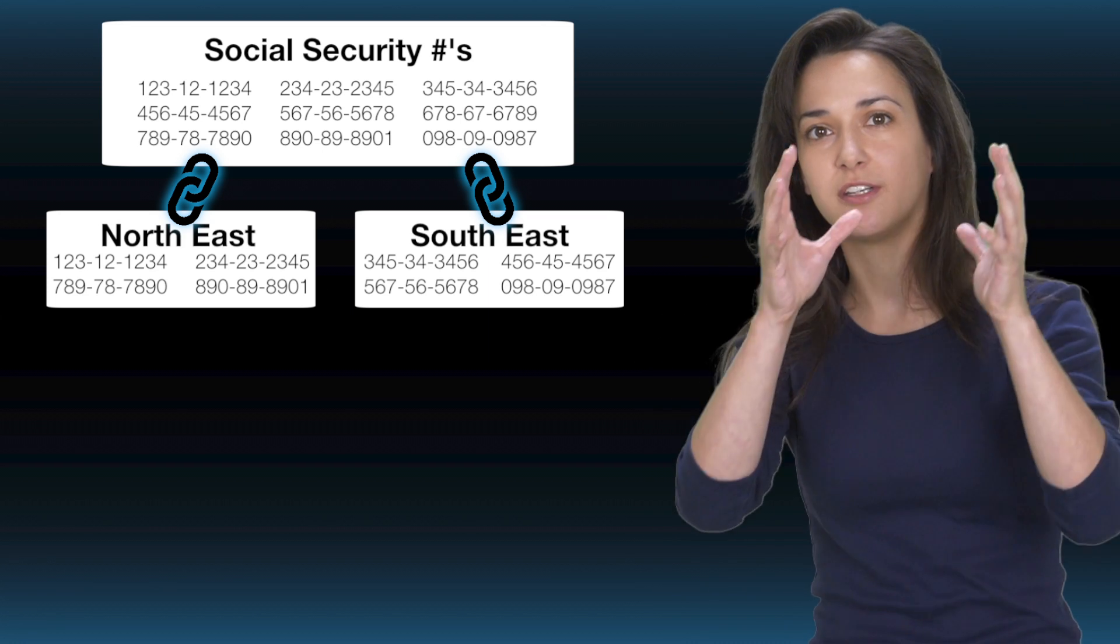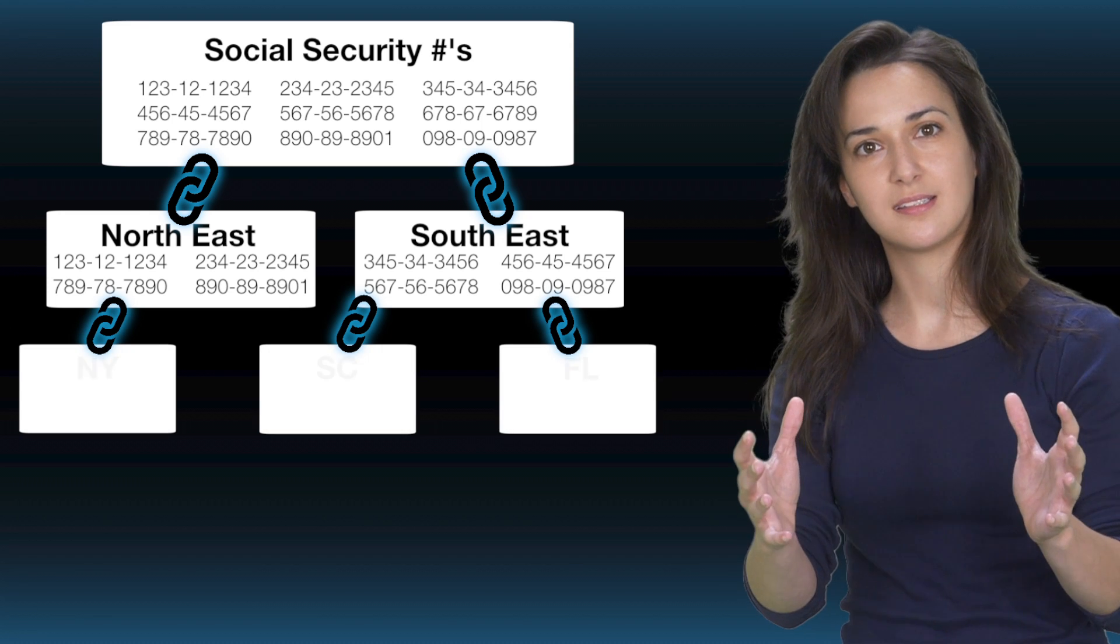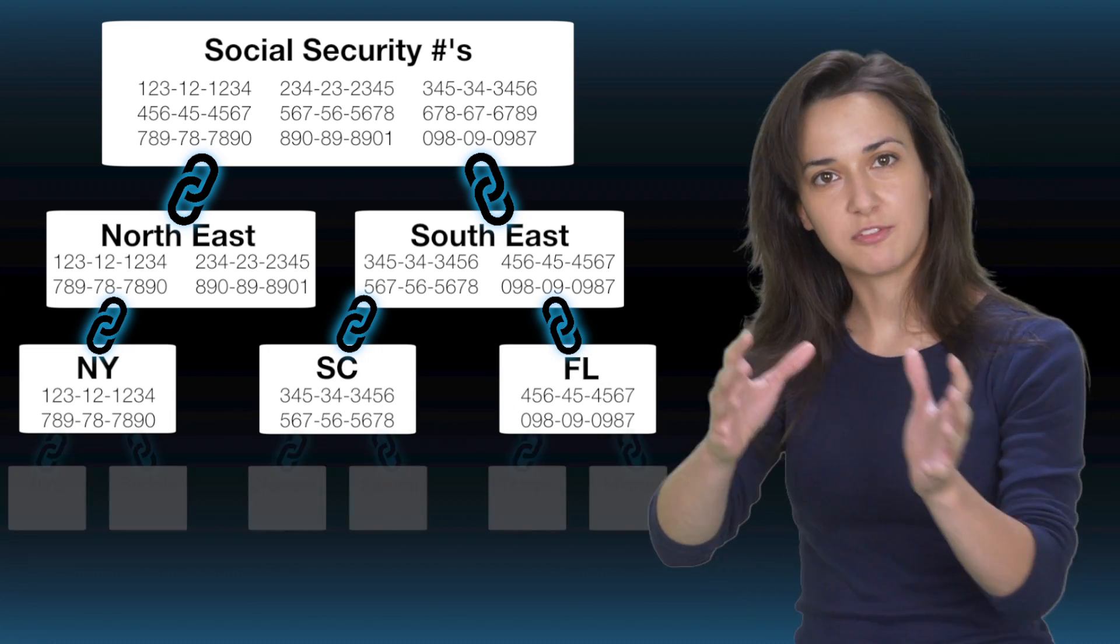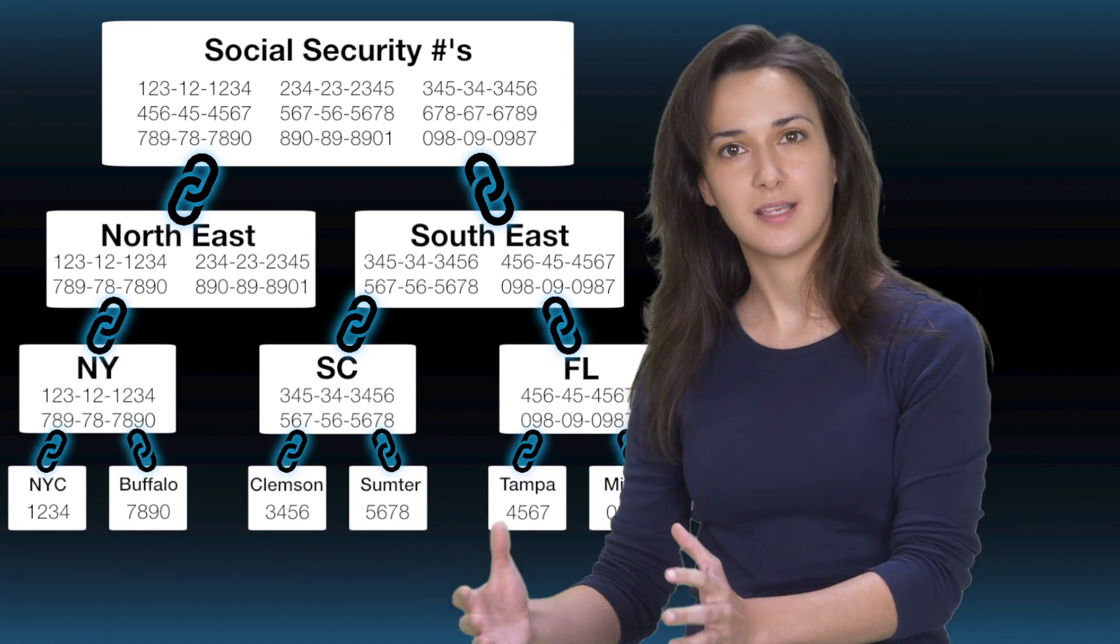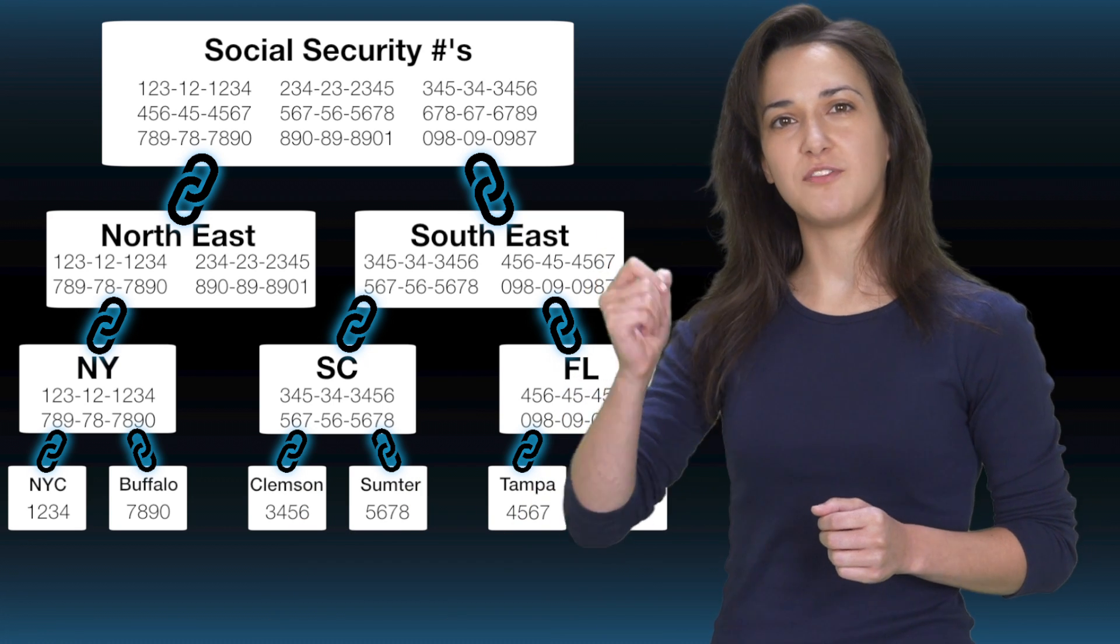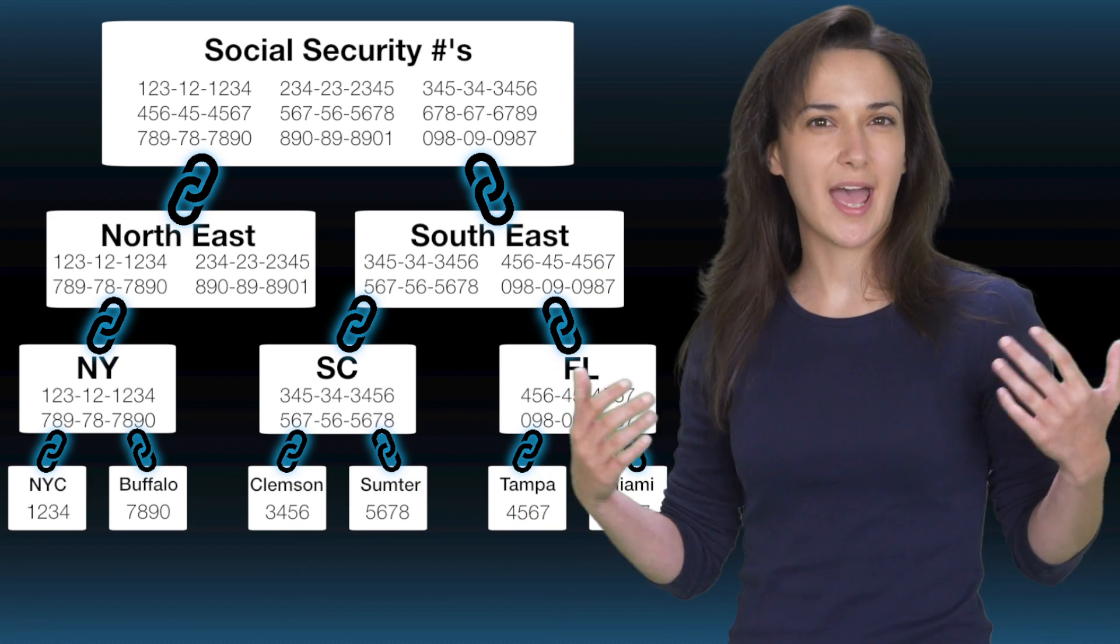And the child block stemming from this represents states, and the child block stemming from that represents cities, and so on. That should give you a very simplistic idea of what a hash tree is.